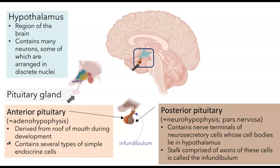There's a physical stalk that carries the axons connecting the hypothalamus, where the cell bodies lie, and the site of release in the posterior pituitary. This is called the infundibulum. Although in pictures like this, the pituitary is often just shown hanging down and floating free, I want to remind you that the brain, including the pituitary, is encased by bones. There's a sphenoid bone that has a little pocket in it in which the pituitary is going to sit.